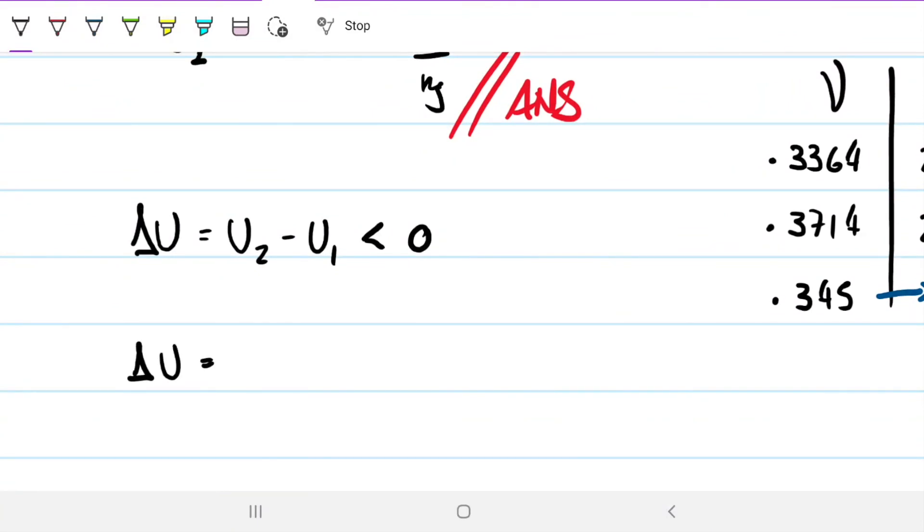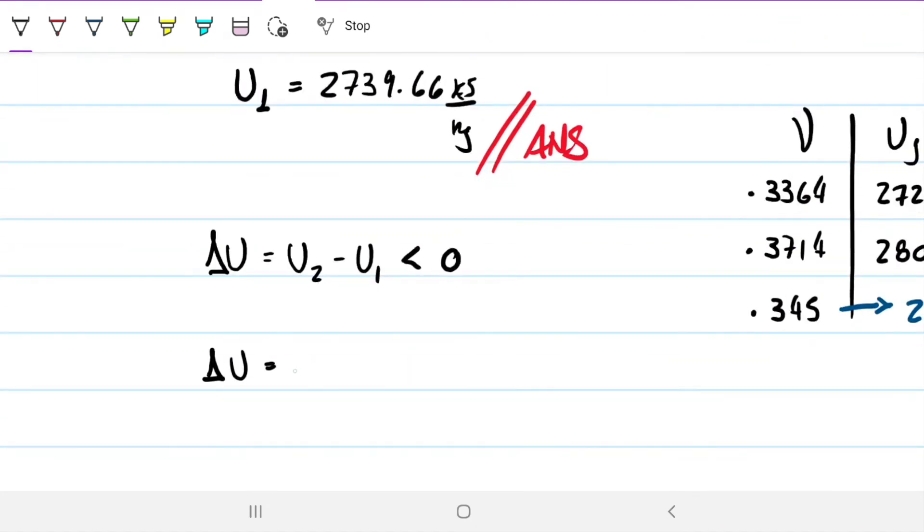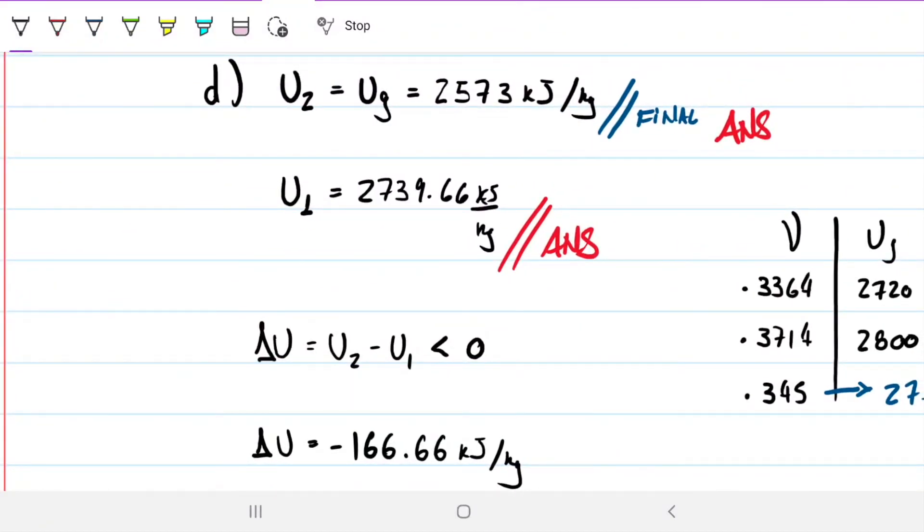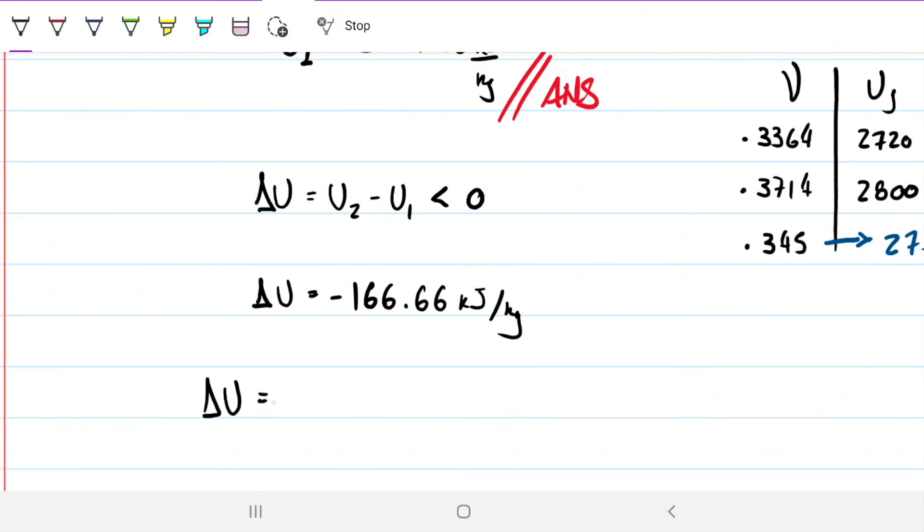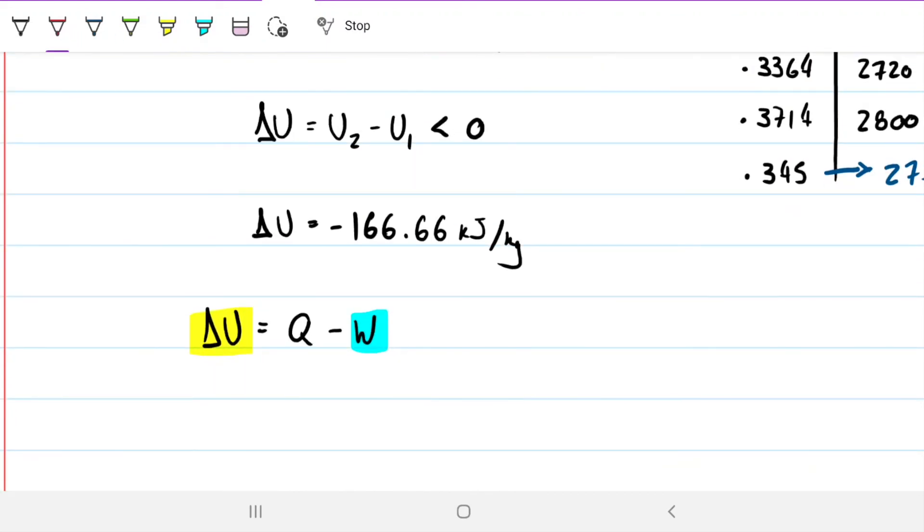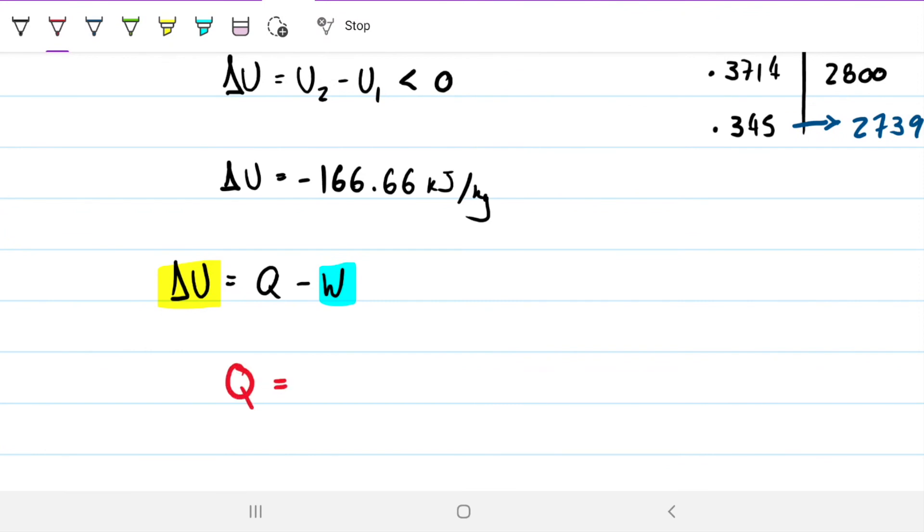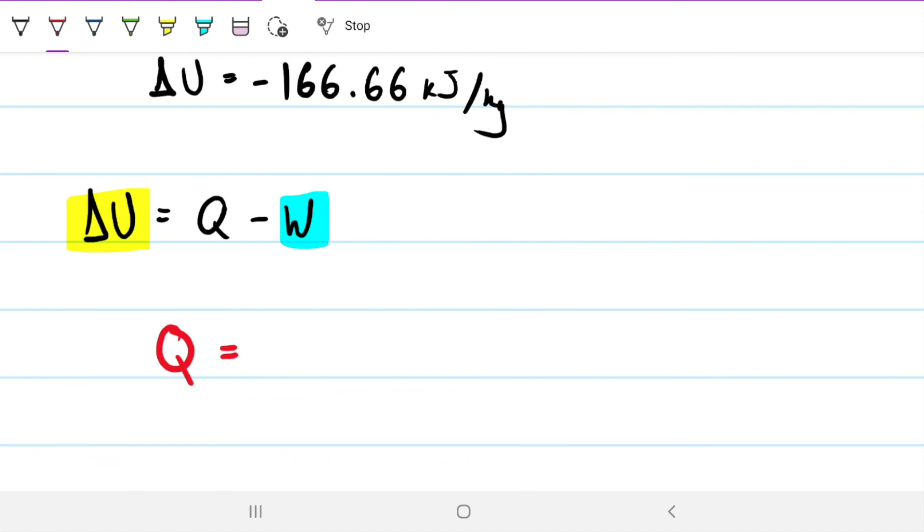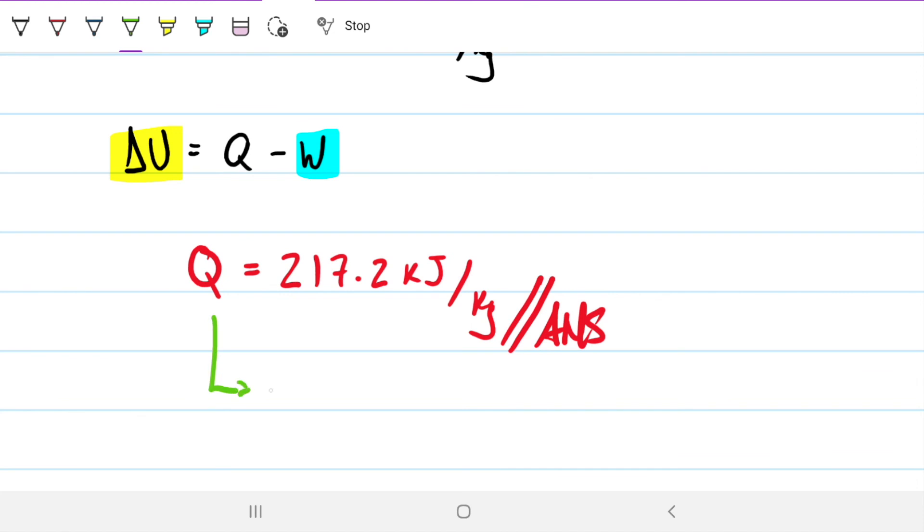We have two surpluses of energy. One is from delta U, and we can do that math. That's negative 166.66 kilojoules per kilogram. We also have the 50.54. We know that energy has to go somewhere, and we know that delta U equals Q minus W. If this is releasing 50 kilojoules and this is releasing 166 kilojoules per kilogram, then everything has to be leaving in the form of heat. Therefore, my heat is just the sum of these two quantities. 166 plus 50.54 gives me 217.2 kilojoules per kilogram, which is the energy leaving our system. That's Q out.